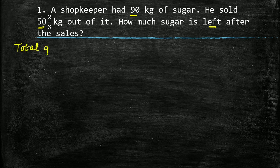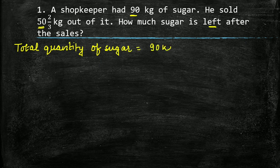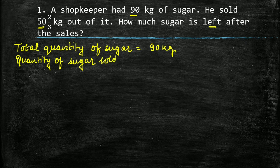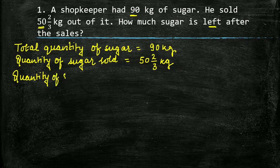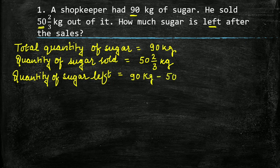Total quantity of sugar is equal to 90 kg. Quantity of sugar sold is equal to 50 whole 2 upon 3 kg. Quantity of sugar left will be equal to 90 kg minus 50 whole 2 upon 3 kg.